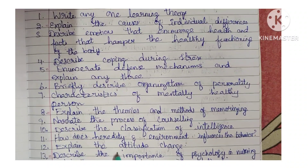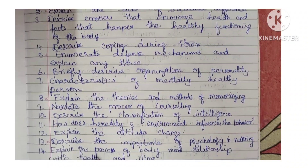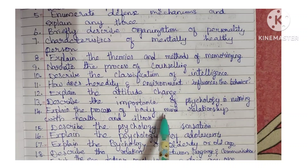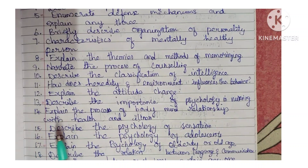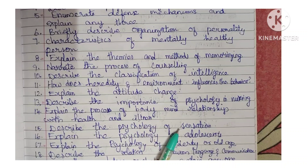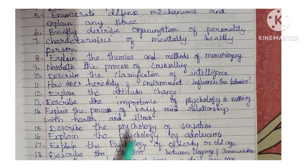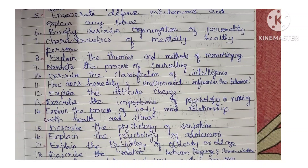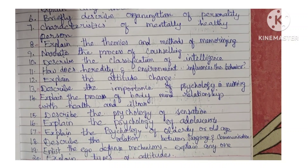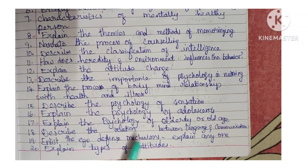Next: explain the attitude change. Next: describe the importance of psychology in nursing. Next: explain the process of body-mind relationship with health and illness. Next: describe the psychology of sensation. Next: explain the psychology of adolescence. Next: explain the psychology of elderly or old age. Next: describe the relationship between language and communication.